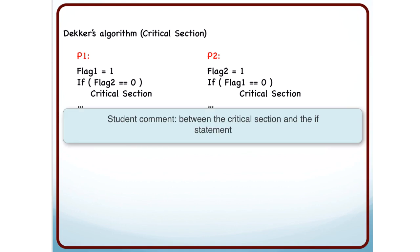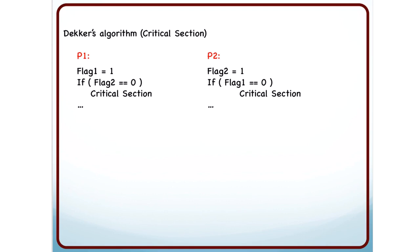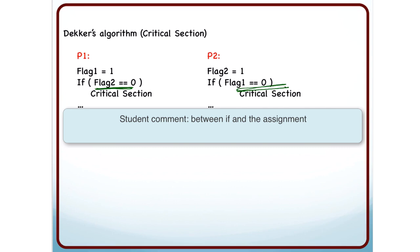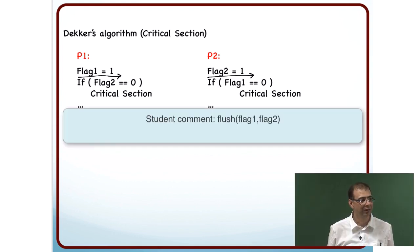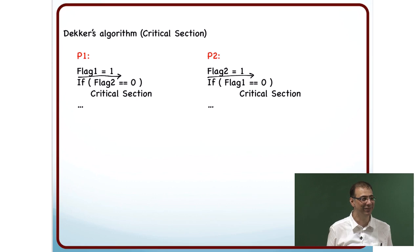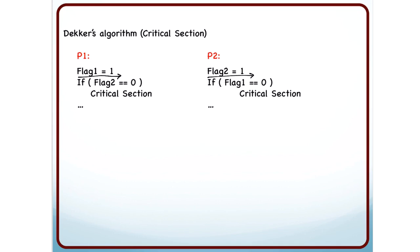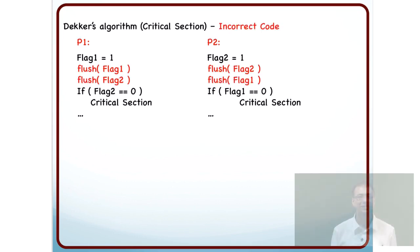The flush should be placed between the assignment and the if statement — not between the critical section and the if statement, because if both threads enter the if condition the damage has already been done. So I need to add a flush here before the if statement. The safest flush instruction to use is flush with all the relevant flags — flush flag1, flag2 — since you do not know which one to do, just do all of them.